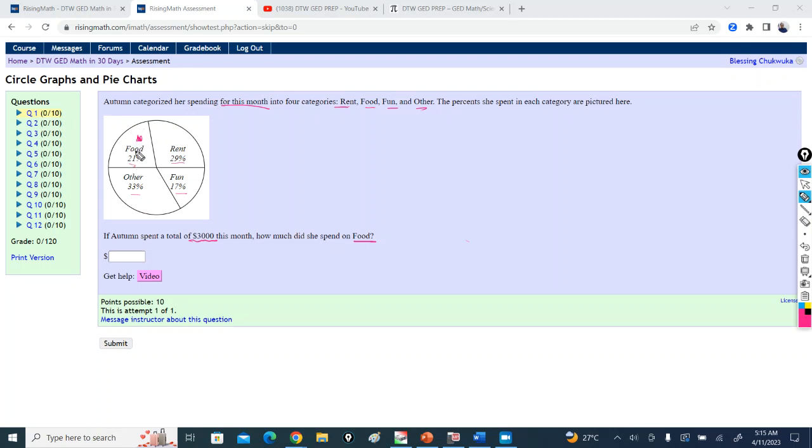So on food, we're trying to look for the amount she spent on food. We have the total amount. This brings us to our percent formula, which says part over whole or base equal to our rate, or you can call it percent over 100. Where here, our unknown is the part, which is food. We know our rate, food percent is 21%. And our whole for this month is $3,000.